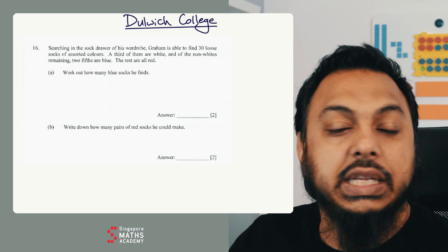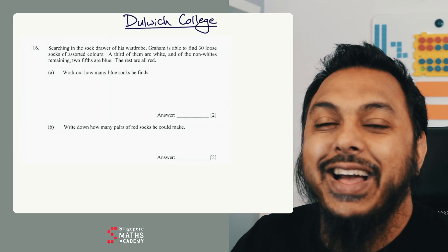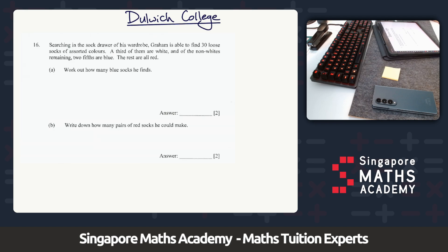Hey everyone, we're going to go through a Dulwich College question here today. It says searching in sock drawer of his wardrobe, Graham is able to find 30 loose socks of assorted colors. Wow, 30 different colors, brilliant. So 30 colors, a third of them are...